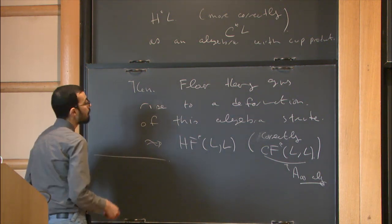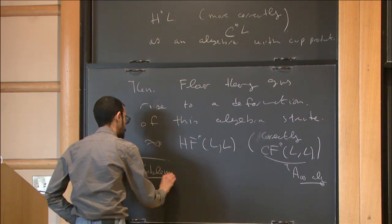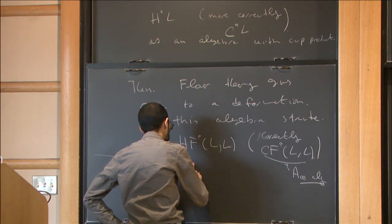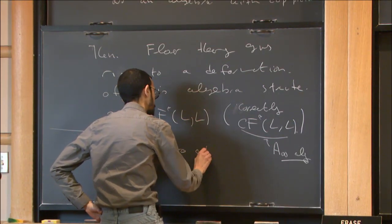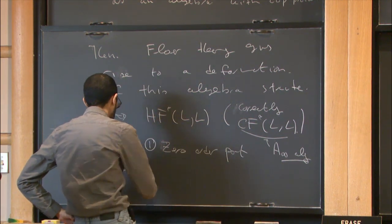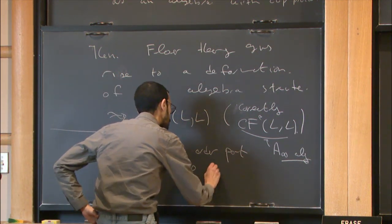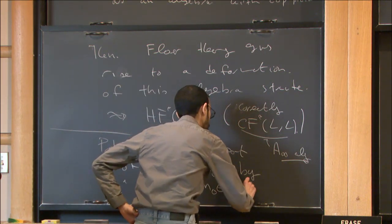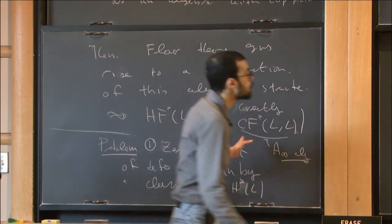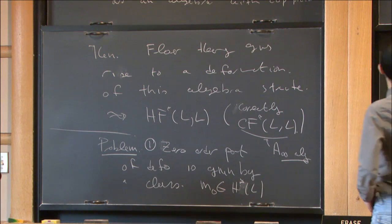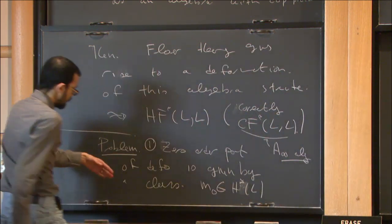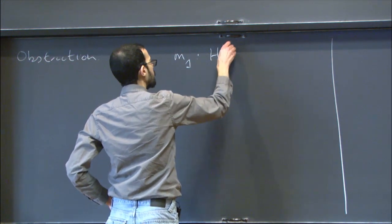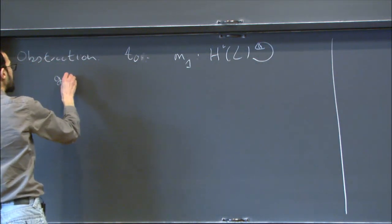The main problem is that when you set up this deformation, you don't actually get an algebra where the zeroth order part works cleanly. Problem one: the zeroth order part of the deformation is given by a class M0 inside HF*, which is an obstruction to the deformed differential M1 — as a map from cohomology to itself — giving rise to a differential.